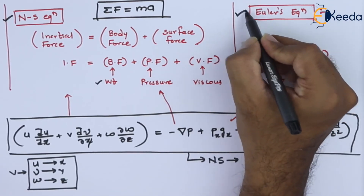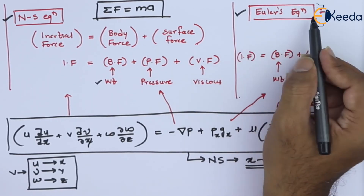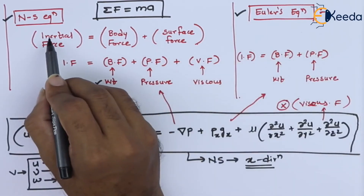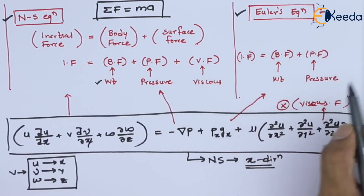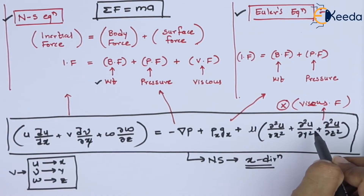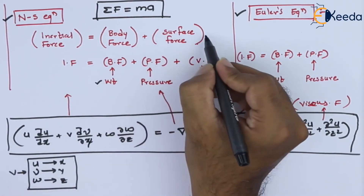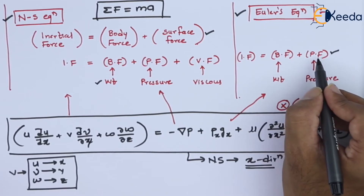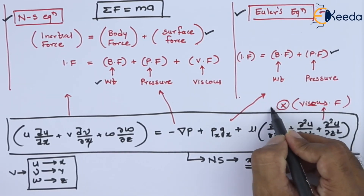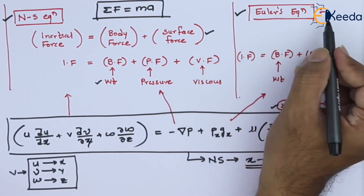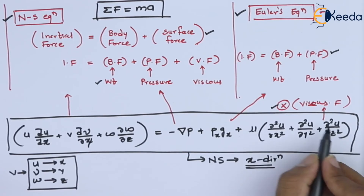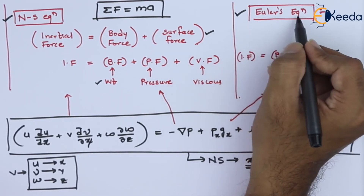One more equation we need to understand is the Euler's equation. The difference between the Euler equation and the Navier-Stokes equation is that in the Euler equation we do not consider the viscous force. The only surface force that comes into picture is the pressure force. So the second-order differential term for viscous force does not appear in Euler's equation.